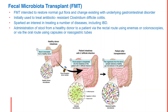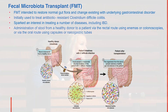The administration of the stool from a healthy donor to a patient is via rectal route or oral route. The rectal route is through an enema or through a colonoscopy, and through the oral route is through a nasogastric tube or an oral capsule.